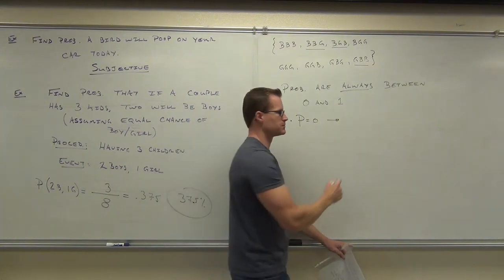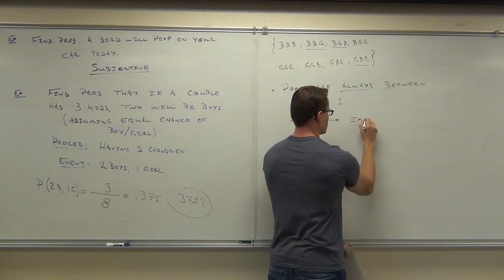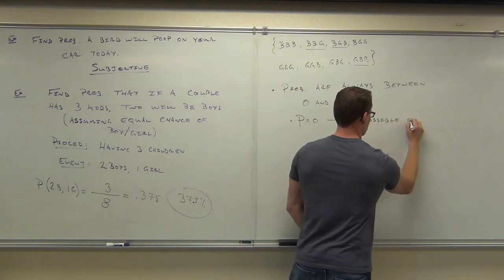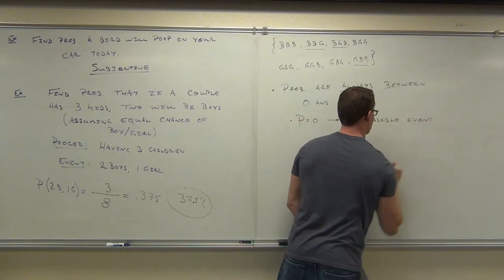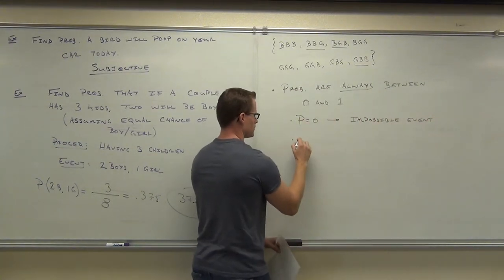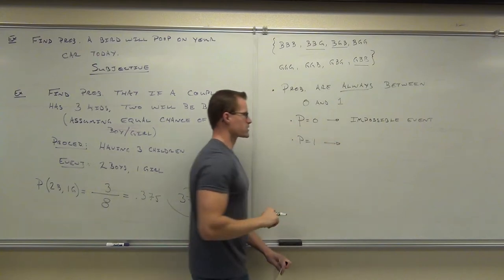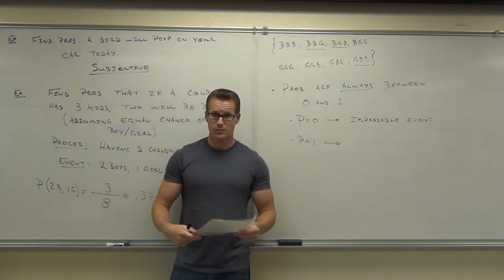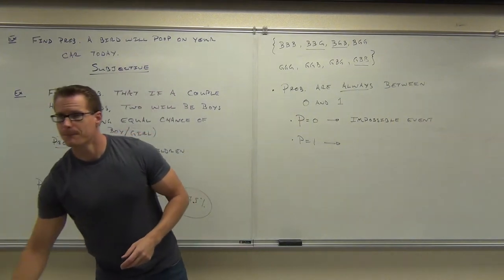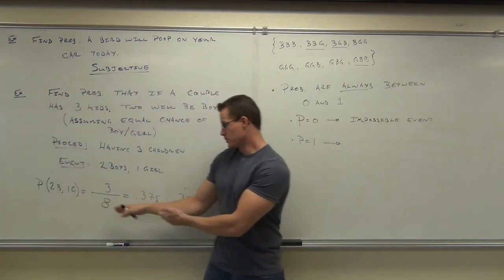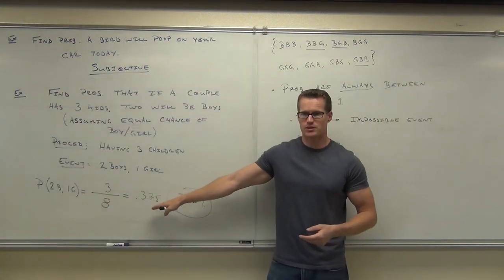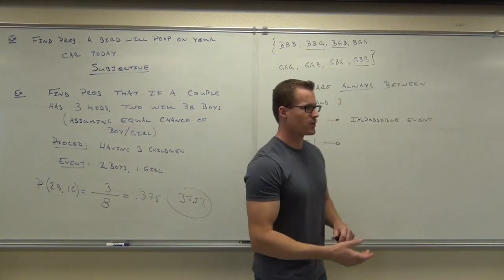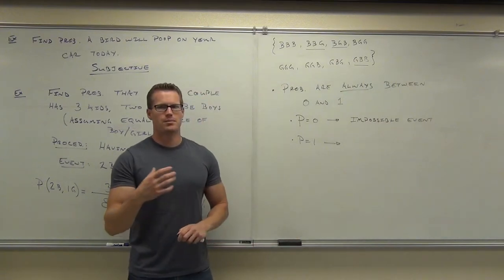What would the probability be? With that in mind, what's the probability equal to one imply? This is possible — that's not equal to one. You can get two girls and a boy, or two boys and a girl. So the probability of one means it's more than possible.